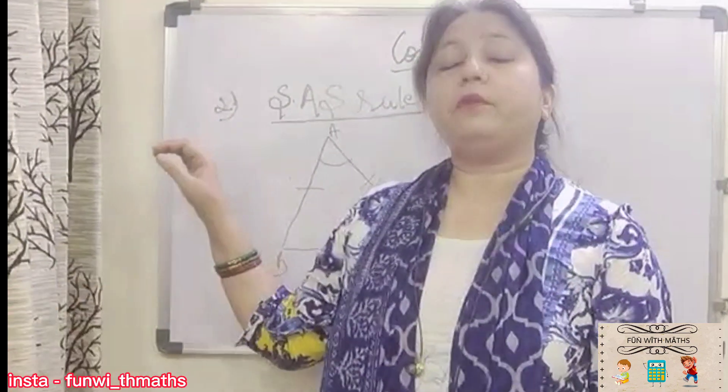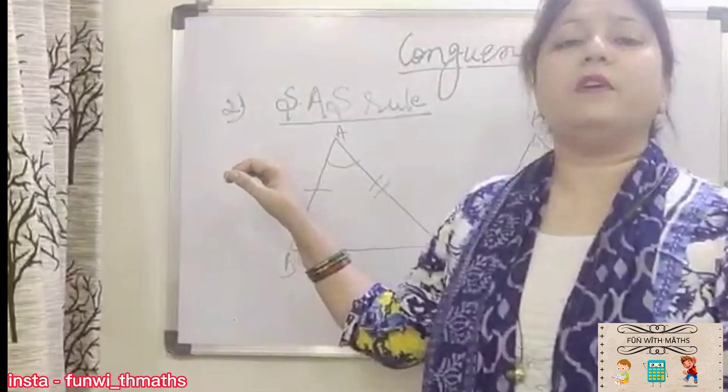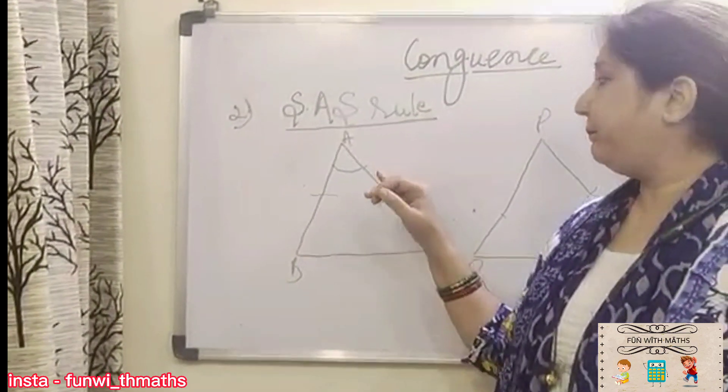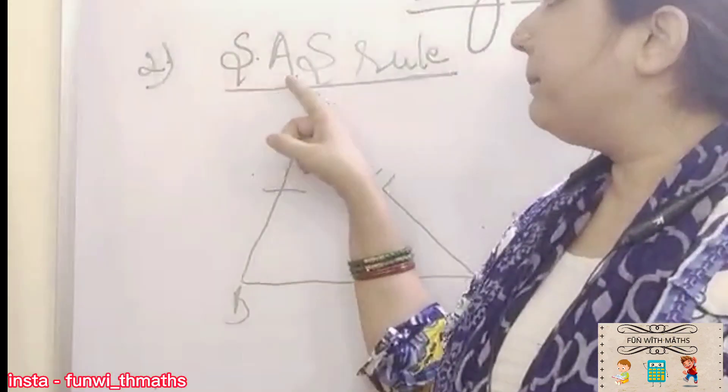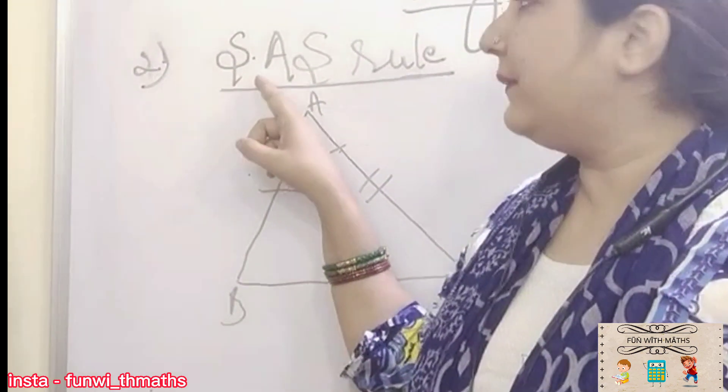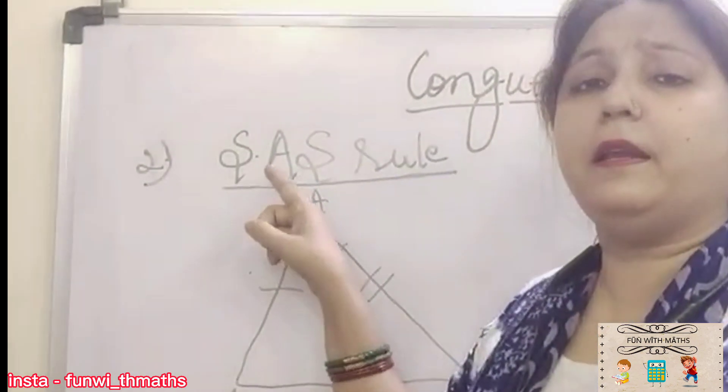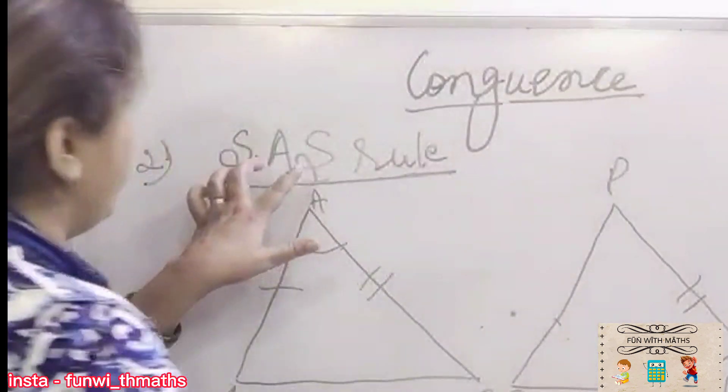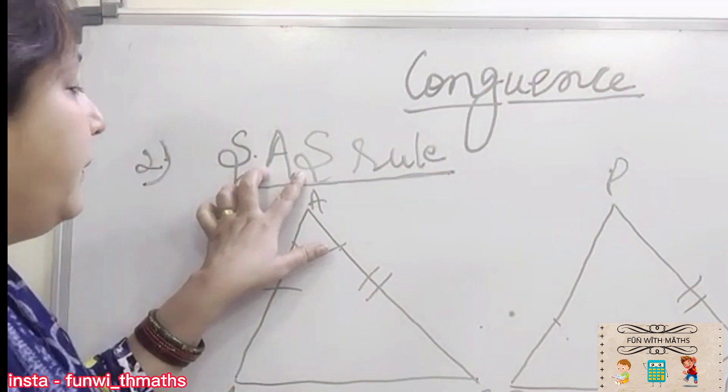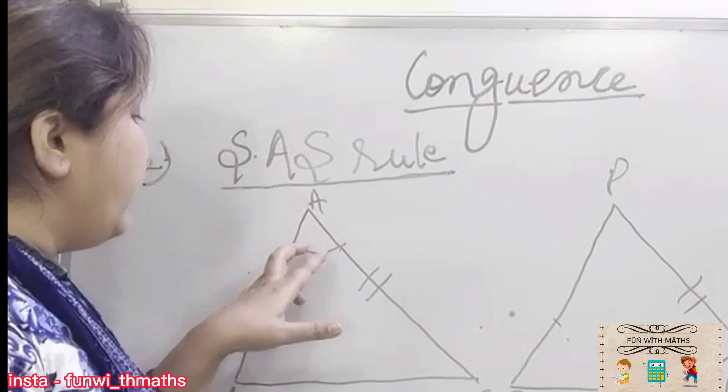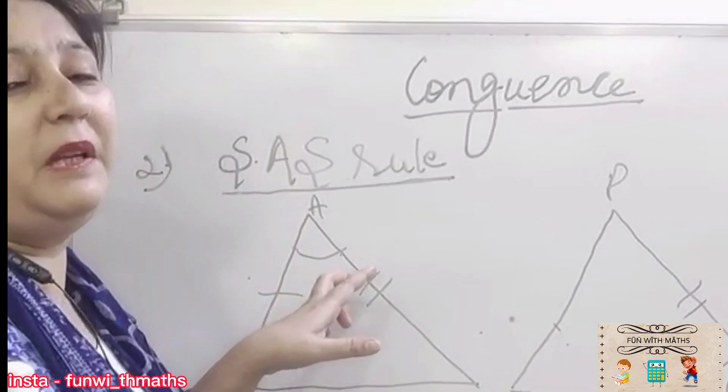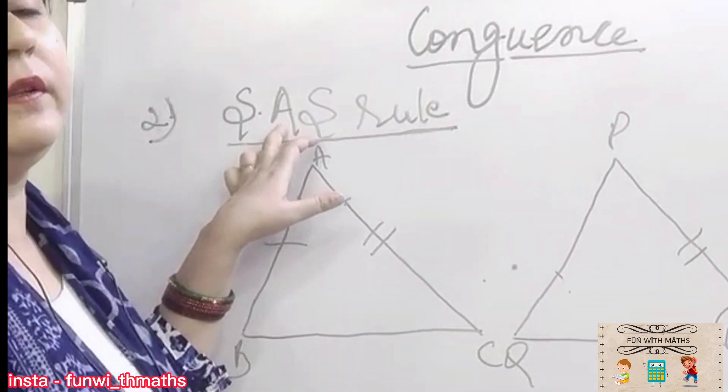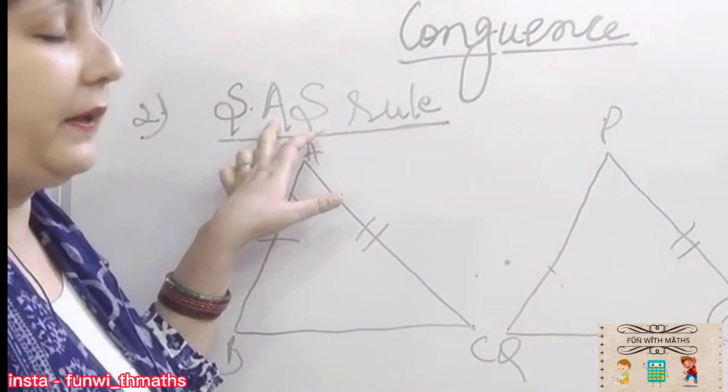Now today I have brought for you the second one, SAS. Can you see? Purposely this SAS, A is in between. It is serving a purpose that whichever two sides you will take, the angle between those two sides must be there. So this angle is known as included angle.